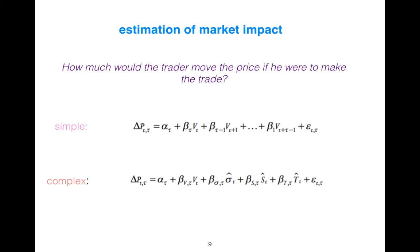The simple relationship is between changes of price from time t to τ, which is related to volume. If you need a very complex relationship that has better accuracy with less error, then you use the complex one. Δp represents changes in price from t to τ.